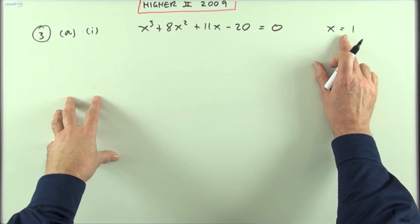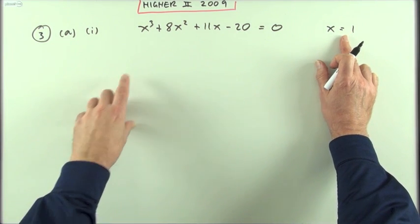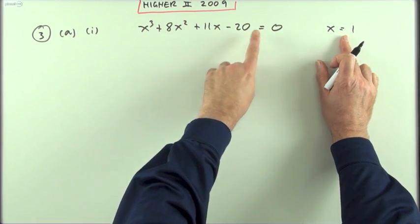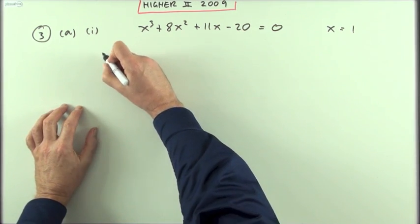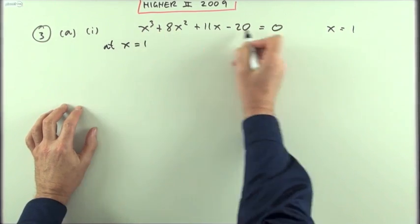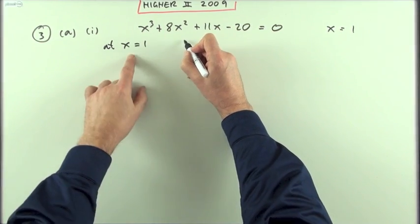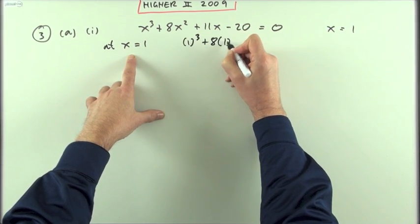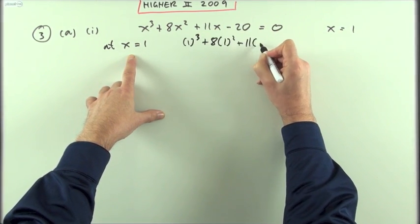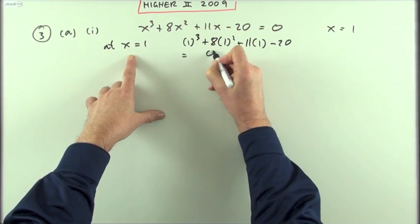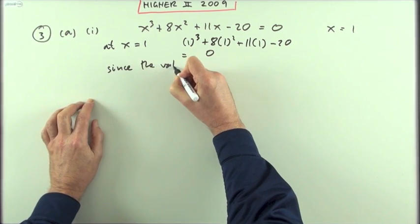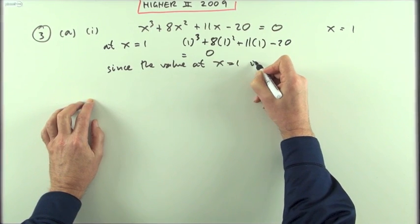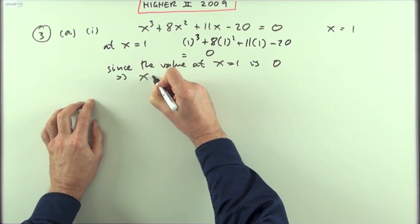Strictly speaking, I'll put down both ways. If x equals 1 is a root, that means that the value of this expression at x equals 1 should come to zero. The roots are the solutions to that equation. So one way of going through this would be to say at x equals 1, you've got 1³ + 8(1)² + 11(1) - 20, which equals 0.